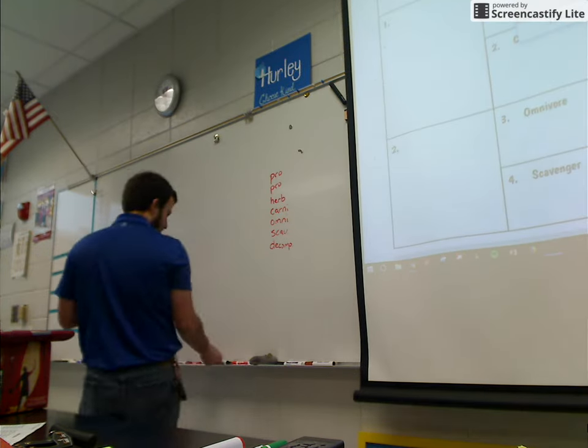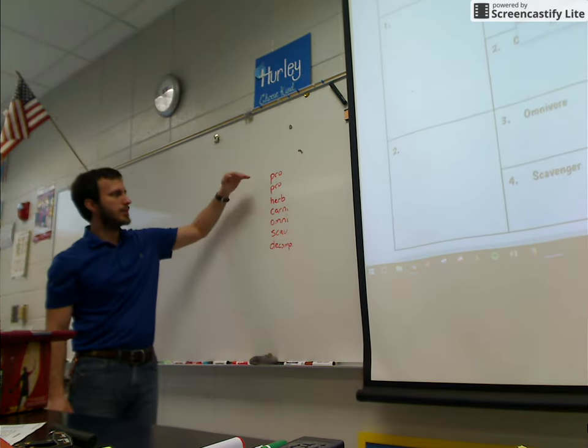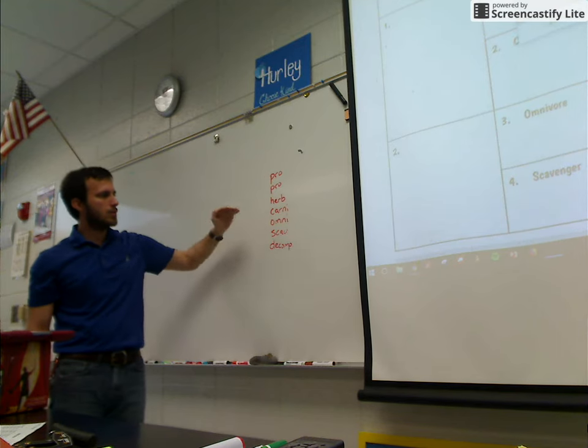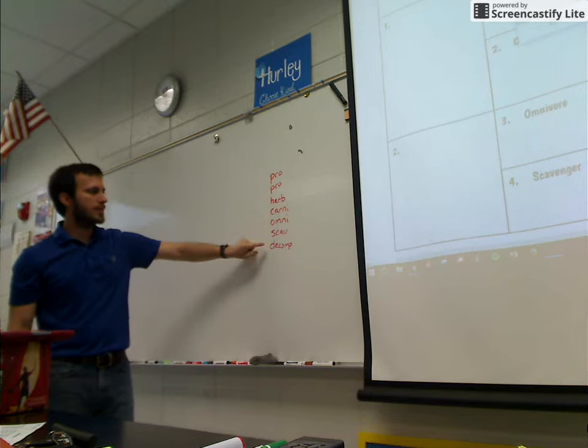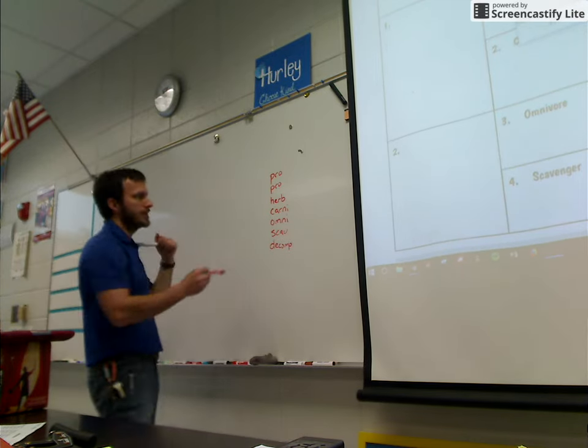All right, so on your rubric you have these requirements. It tells you that you have to have two producers, an herbivore, a carnivore, omnivore, and scavenger—and all those are consumers—then you have to have a decomposer. But it also tells you that you have to have ten organisms, and this is only seven.